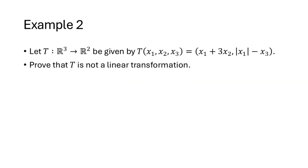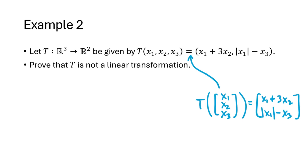Now consider a transformation from R3 to R2 given by T of (x1, x2, x3) equals (x1 + 3x2, |x1 − x3|), and we want to show that T is not a linear transformation. To do that, we only need to show that T fails to respect vector addition or scalar multiplication — just one counterexample is sufficient. It's much easier to show a transformation is not linear than to prove it is.